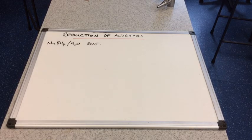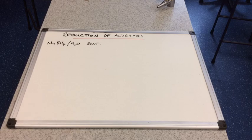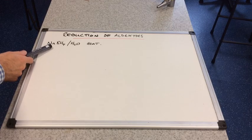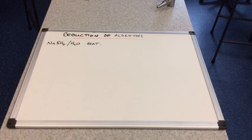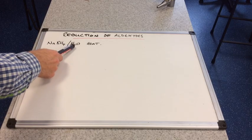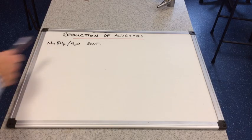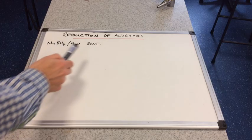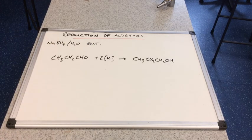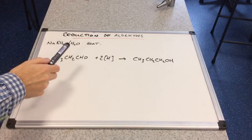Before we do the mechanism, we'll just look at some simple examples of this. So if we start with the aldehydes. So we're going to reduce an aldehyde. We're going to use the reducing agent, NaBH4. But we're going to use H in square brackets for our equation. Now, that's in water. You'll see why when we do the mechanism. And we're going to heat it.